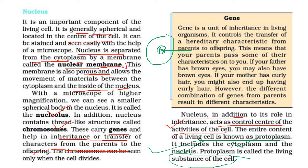Gene is a very important term to remember. A gene is the unit of inheritance in living organisms. It controls the transfer of hereditary characteristics from parents to offspring — whatever character is present in the father or mother will be transferred to the baby. Your parents pass some characteristics on to you: if your father has brown eyes, you may also have brown eyes; if your mother has curly hair, you may also end up with curly hair. When the genes from both father and mother combine, the result can be a different set of characteristics.